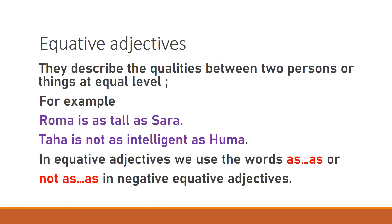Equative adjectives describe qualities between two persons or things at an equal level. For example, suppose there are two girls — Roma and Sara — and both have equal heights. We will say: Roma is as tall as Sara. This is an equative adjective. We can also make negative equative adjectives, for example: Taha is not as intelligent as Roma. It is a negative equative adjective because we have added 'not' in it. So in equative adjectives we use 'as … as', or 'not as … as' in the negative form.